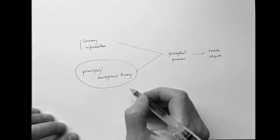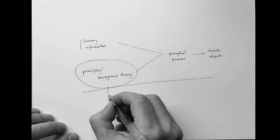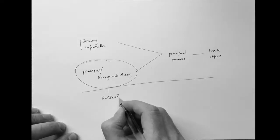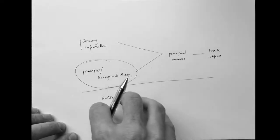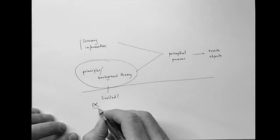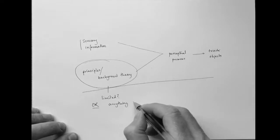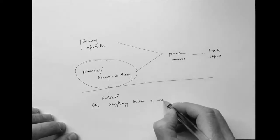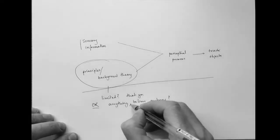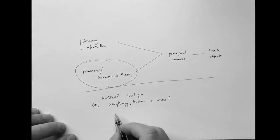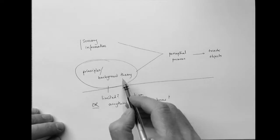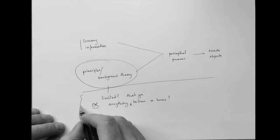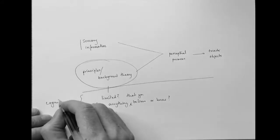Now, our question is, what can go into the principles or background theory that your perceptual processes rely on? Is it that this is in some way limited so that there is a proprietary set of principles or a background theory which is used only for vision and nothing not already part of that theory can be into vision? Or can you put in here anything that you believe or know? If you can, then it would seem that we have cognitive penetration. If you cannot, then we have an absence of cognitive penetration.